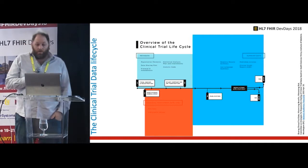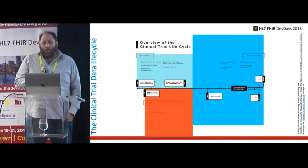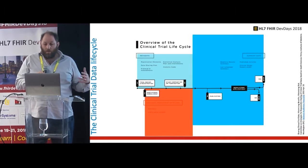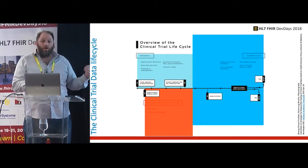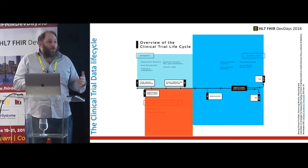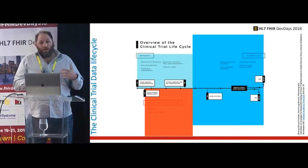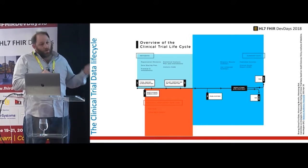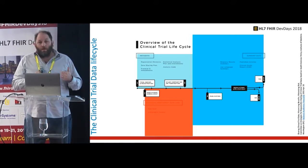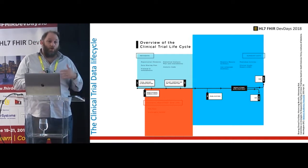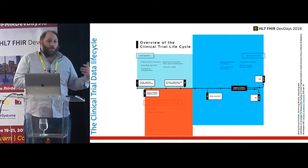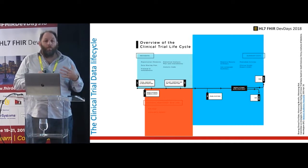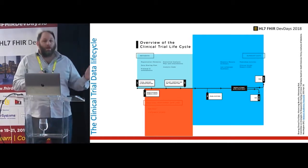The high-level process of getting a drug through starts with preclinical work — finding a compound, identifying it based on protein understanding, then committing to a study. You define the study, put together documents covering what you're going to do, how you'll analyze the data, how you'll prove safety and efficacy. Then you enter the data collection phase, starting with participant enrollment — identifying suitable patients and collecting data for a period of time.